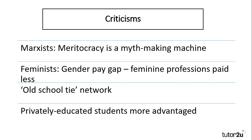So let's look at some of the criticisms. Naturally, Marxists are critical of role allocation and meritocracy, suggesting that meritocracy is a myth-making machine designed to reinforce the traditional roles of middle and working class students. They also argue that promoting ideas of meritocracy helps to legitimise inequality, because it shifts the blame for failure from the education system to the individual — the student with low status didn't work hard enough or wasn't talented enough — when in reality there are far more barriers for working class students to overcome, such as material deprivation and labelling.